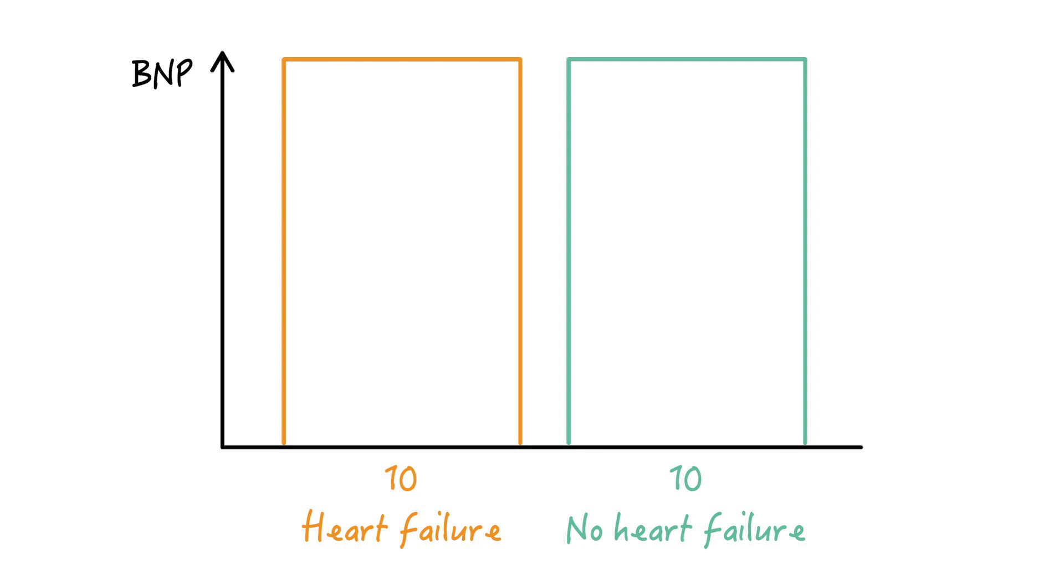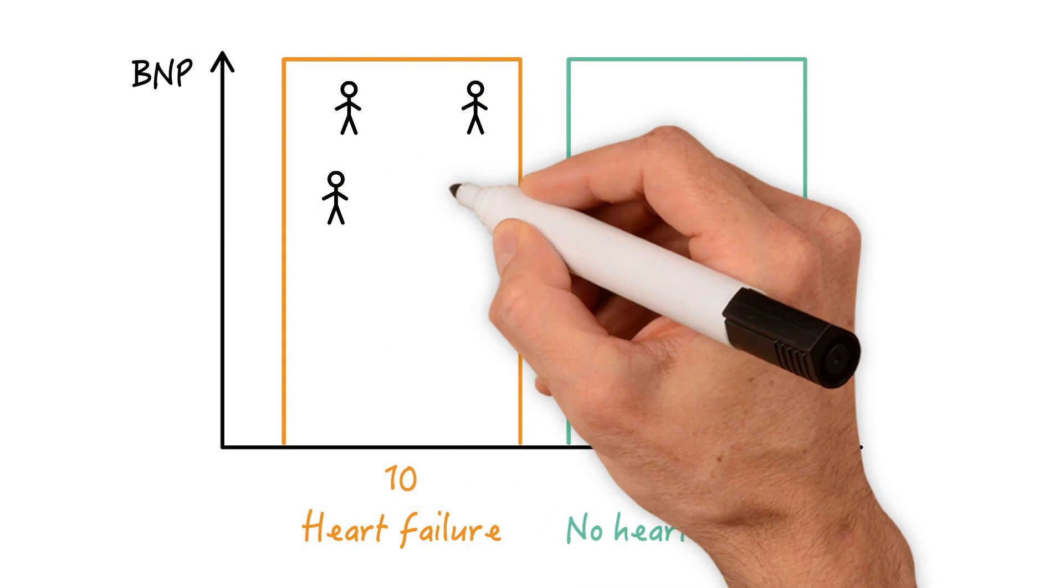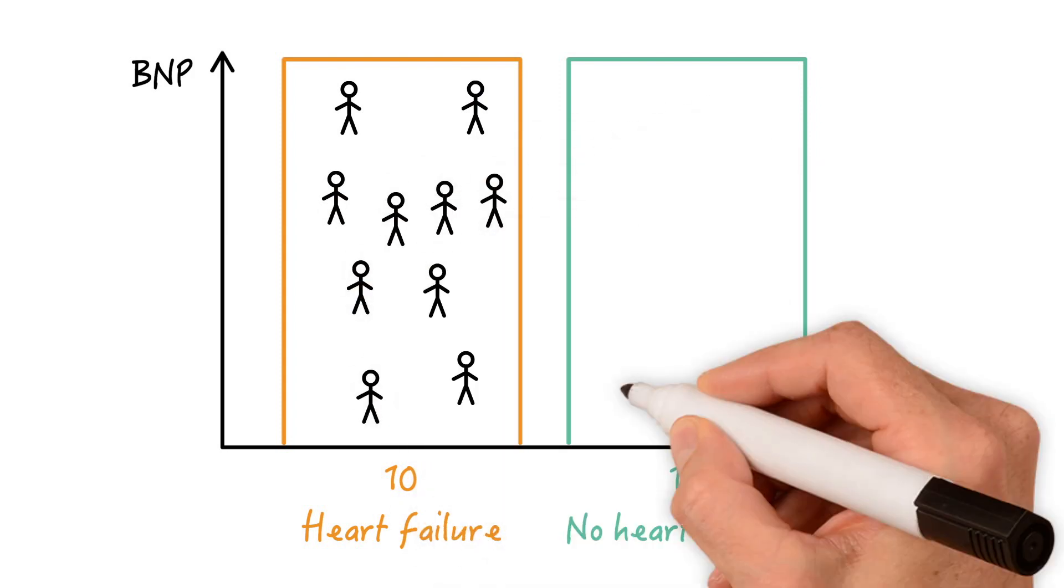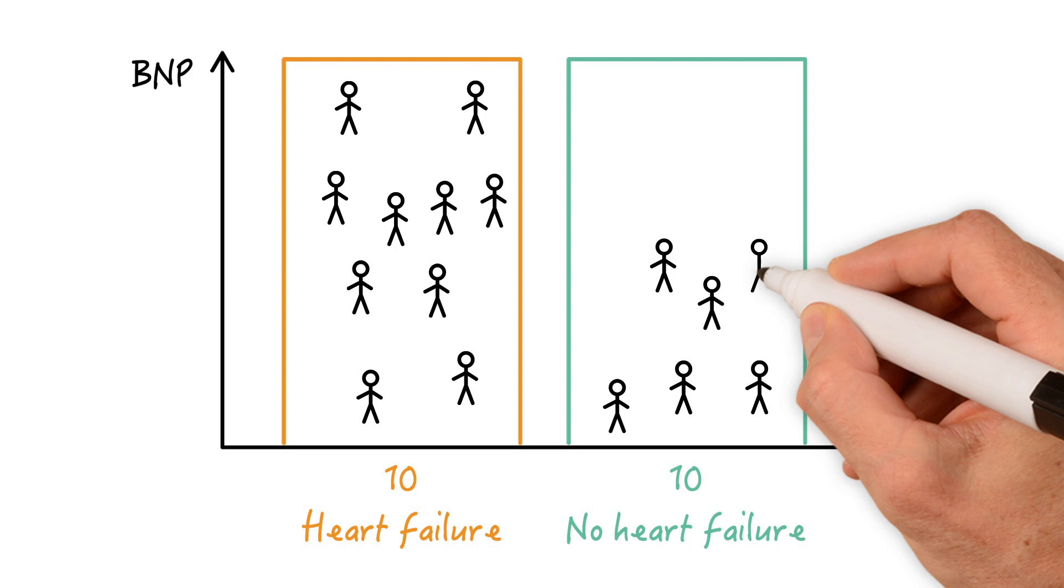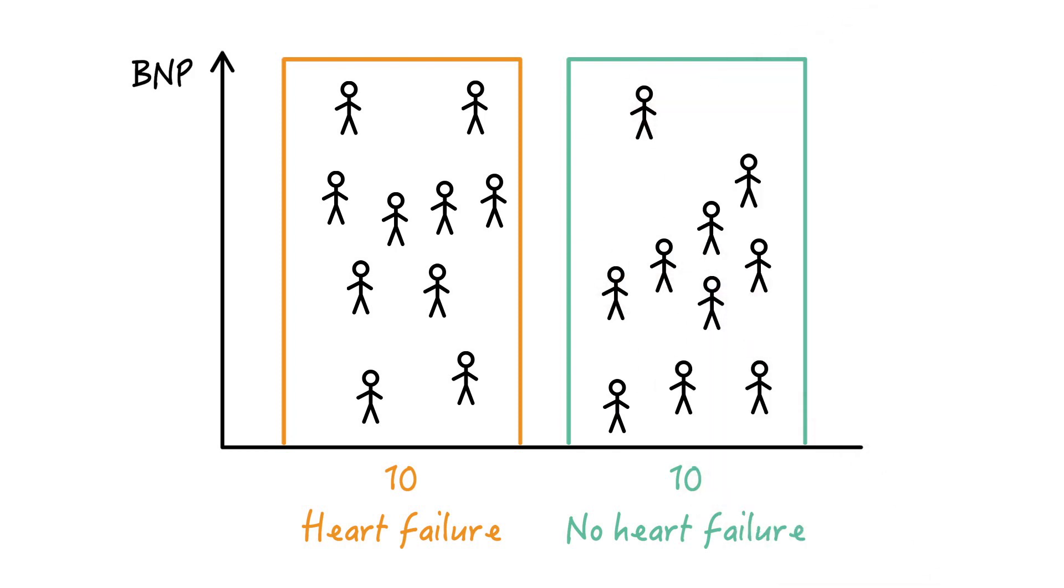People in the heart failure group on average have higher levels of BNP. One's up here, one's here and so forth. Individuals without heart failure have lower levels, but as we've seen previously there will be some overlap.